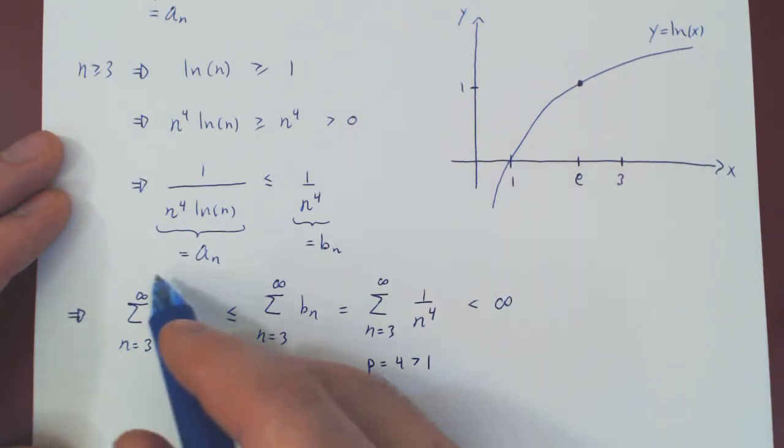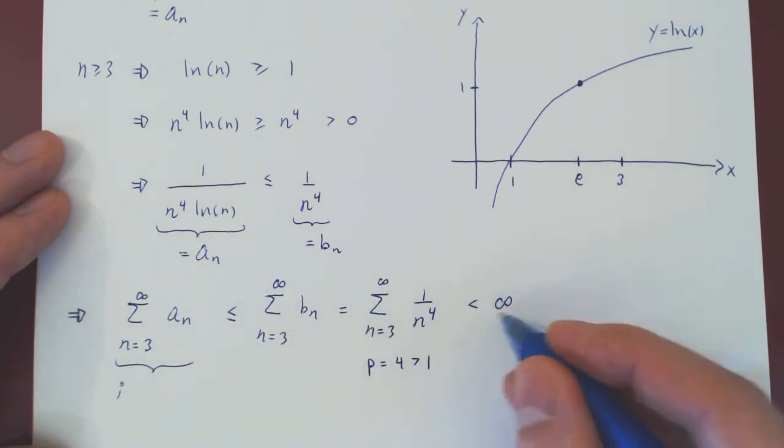But, this means that the original series, from 3 to infinity, is finite, as it is strictly less than infinity.